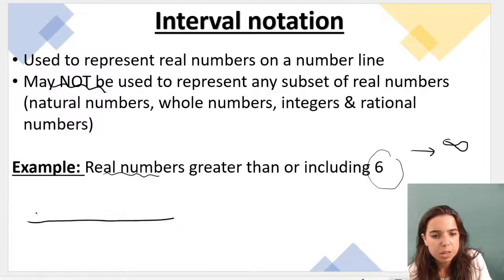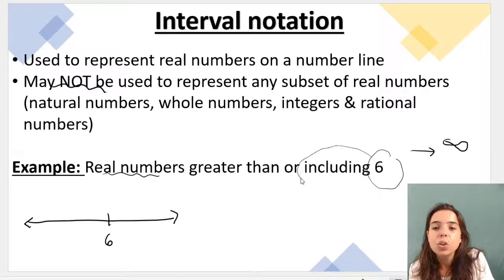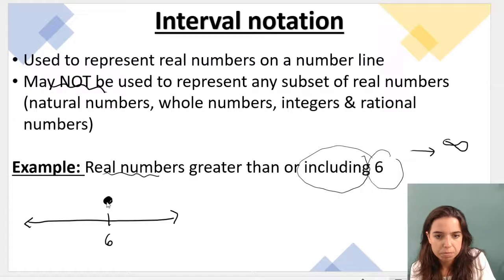Well, on a number line, it's pretty simple. We indicate 6 on our number line. Because it is greater than or including 6, we use a dot that is colored in. Now, a dot that is colored in means including.